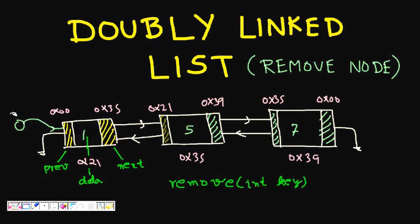The doubly linked list has a head pointer which tells us the address of the first node. Each node has one data portion where we have some data, and it has the address of the next node and address of the previous node.